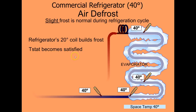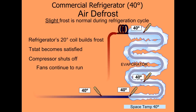Remember, the thermostat needs to have a little bit wider temperature swing than we're used to in residential air conditioning. The compressor is off, and that warm air does flow over the evaporator coil. The fans are always running in a refrigerator.